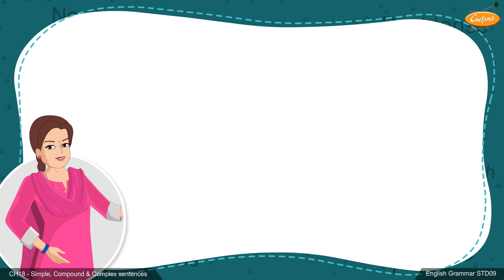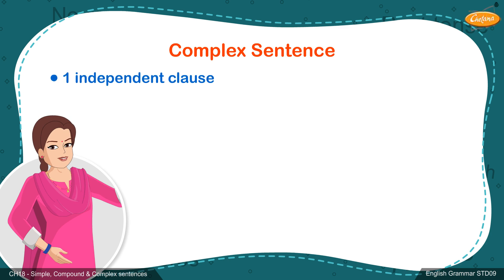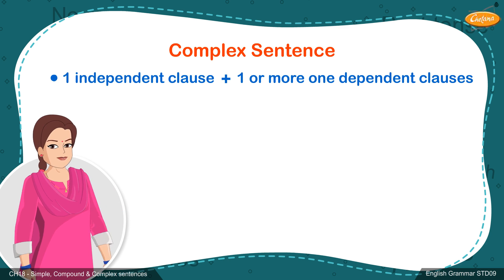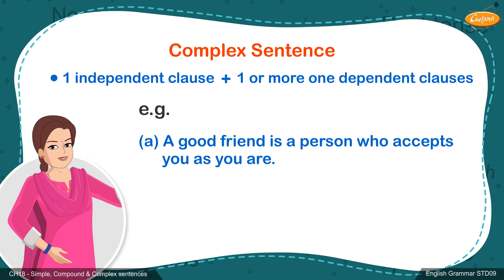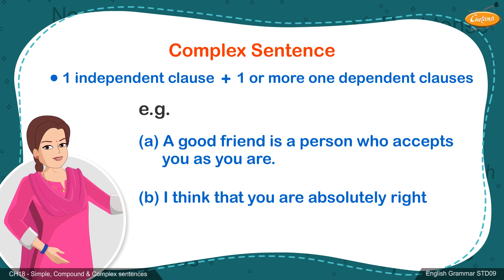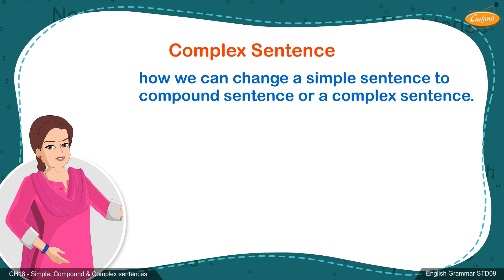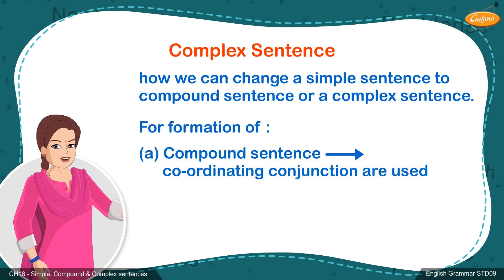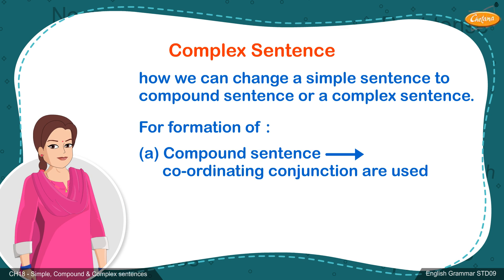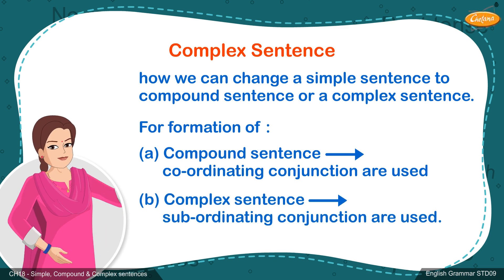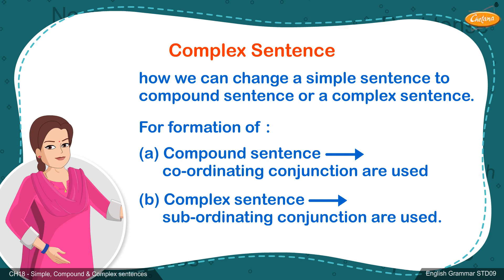Now, we will move on to complex sentences. A complex sentence is a sentence that combines one independent clause with at least one dependent clause or more. Examples: A. 'A good friend is a person who accepts you as you are.' B. 'I think that you are absolutely right.' Now, let us understand how we can change a simple sentence to a compound sentence or a complex sentence. While forming a compound sentence, we make use of coordinating conjunctions. While forming a complex sentence from a simple sentence or a compound sentence, we make use of sub-coordinating conjunctions.